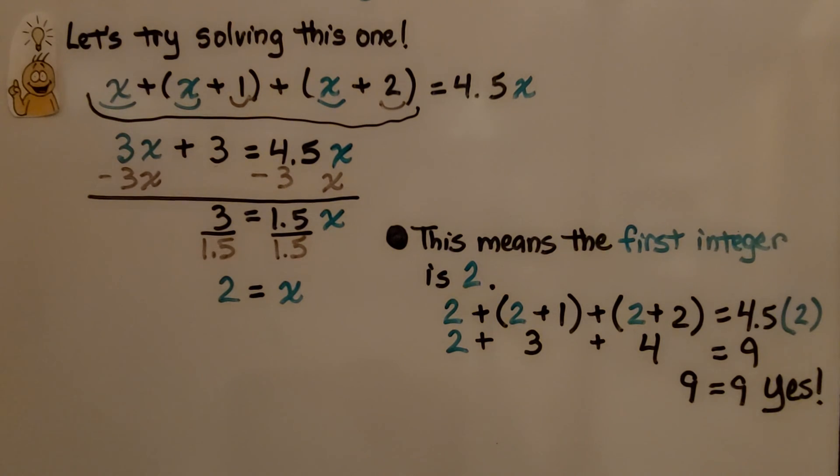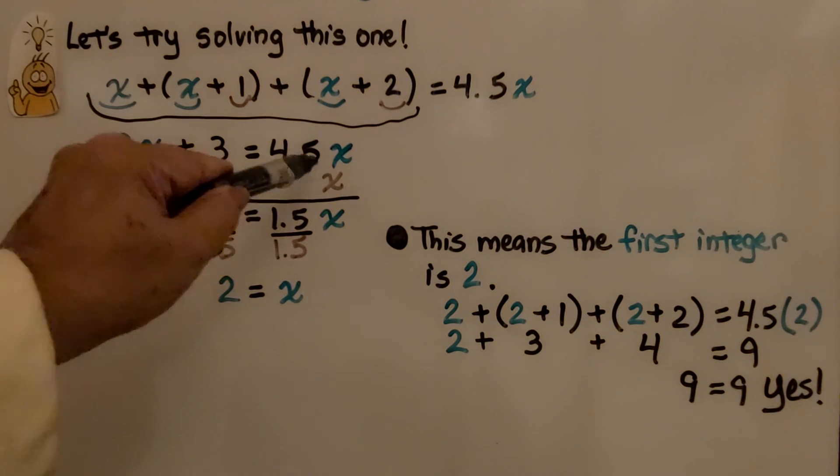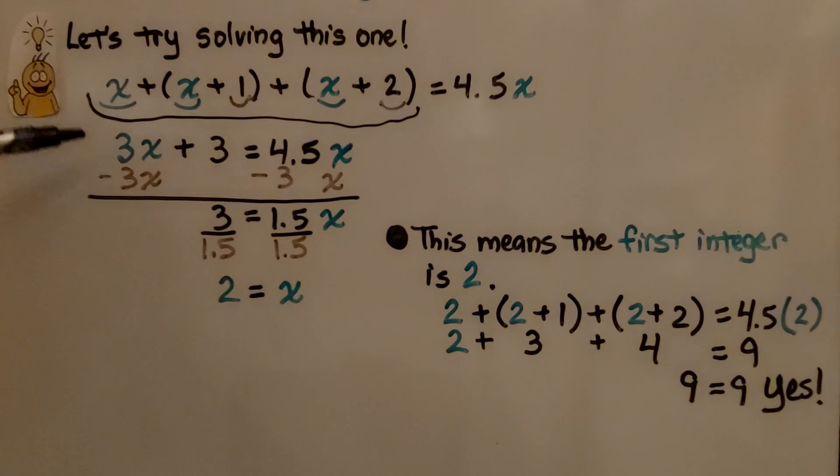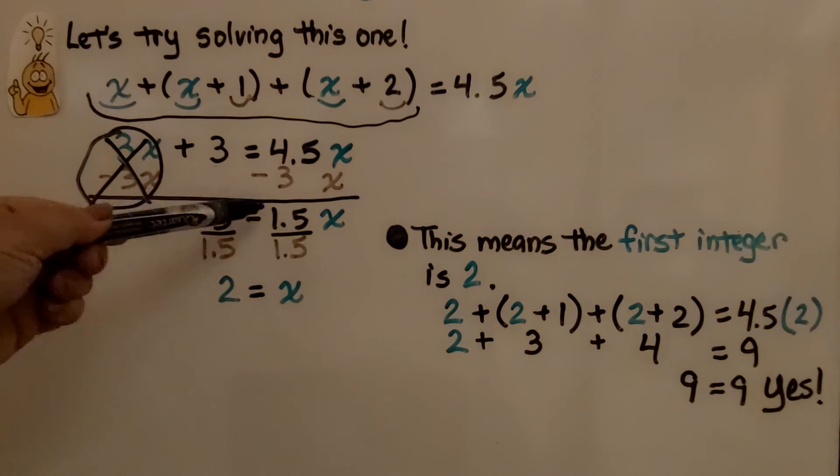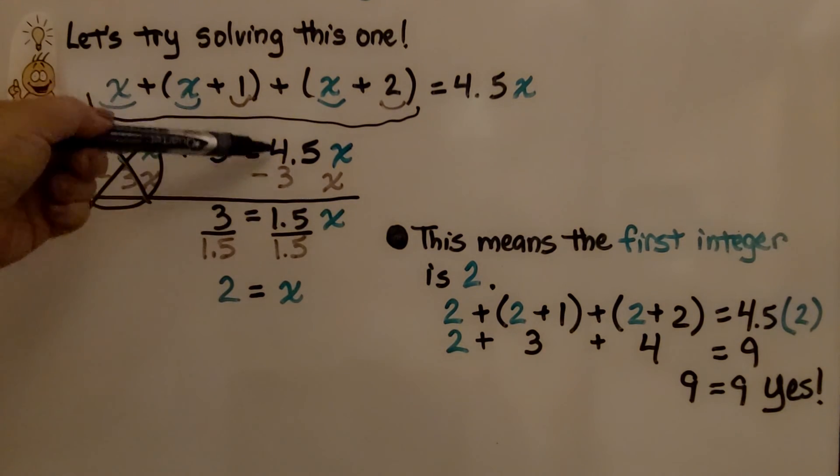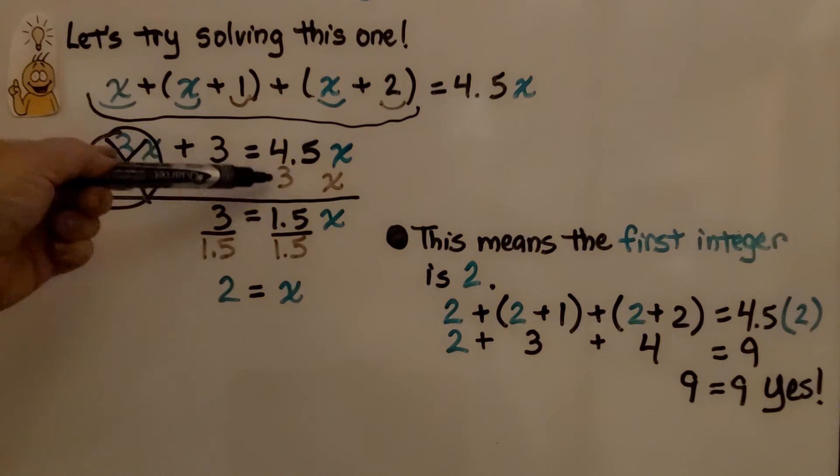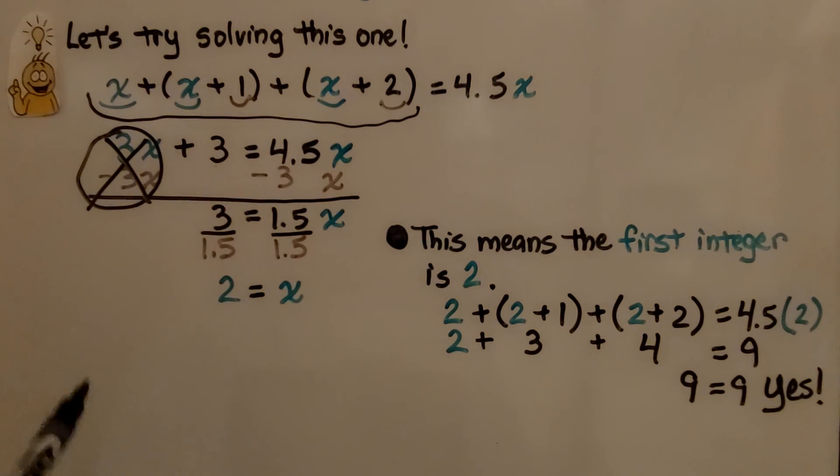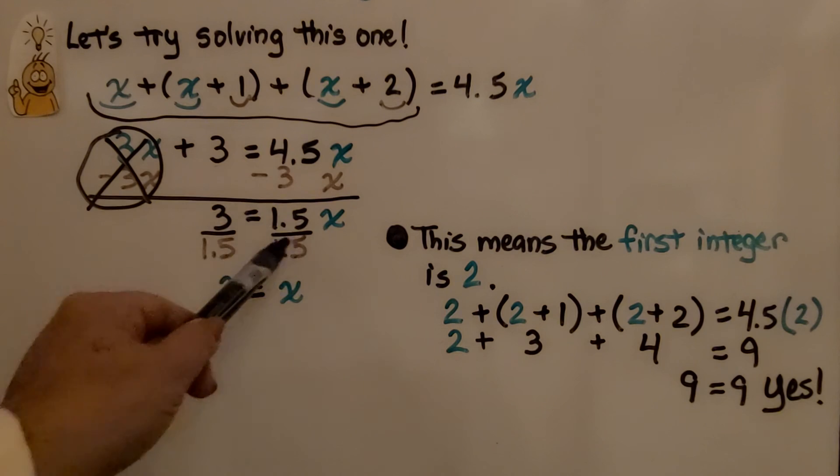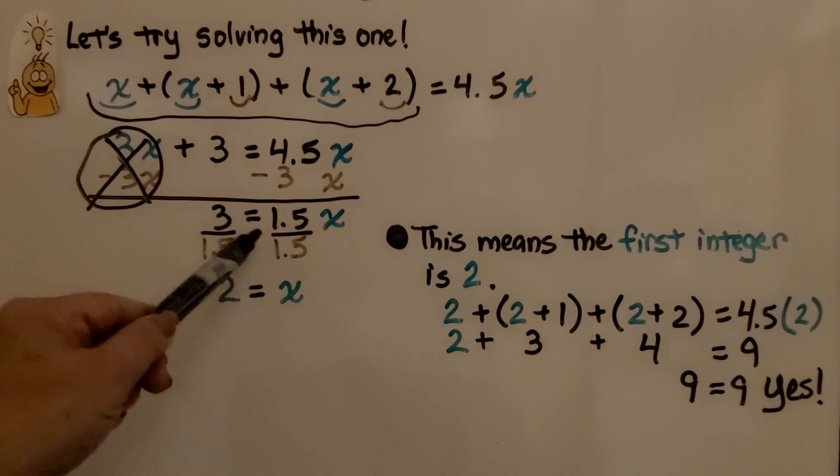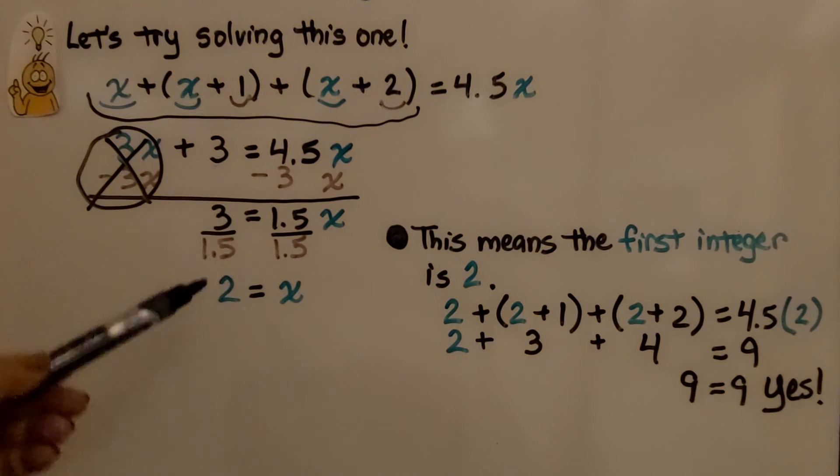We use inverse operations. We would subtract 3x from both sides of the equation. This is a positive 3x. We have a negative 3x. That would get a zero pair. So that's gone. That's eliminated. Now we just have 3 equals 1.5x because we have 1.5 after we subtract 3x from this side. We divide both sides by this coefficient, 1.5, and 3 divided by 1.5 is 2. We know 2 equals x.